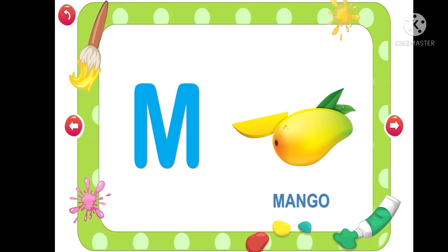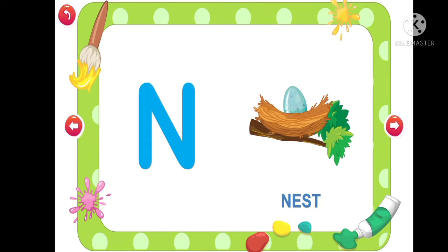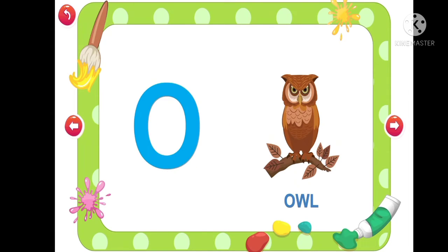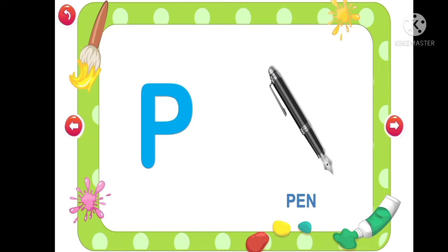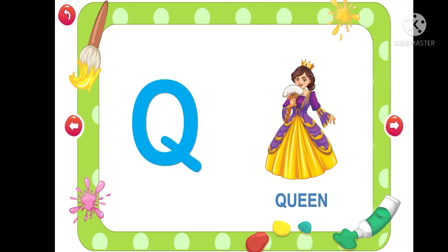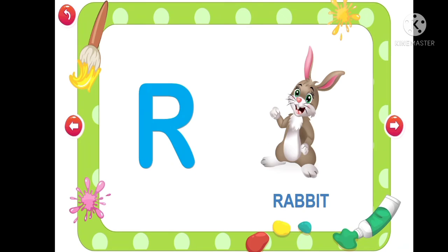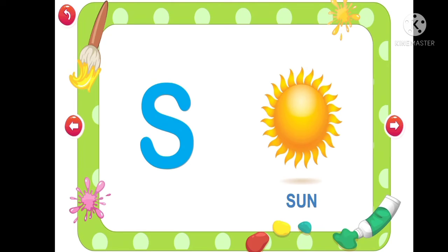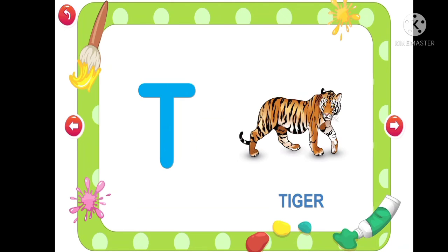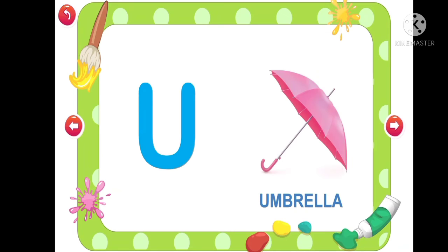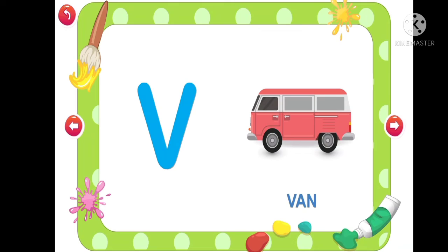N for Nest, O for Owl, P for Pen, Q for Queen, R for Rabbit, S for Sun, T for Tiger, U for Umbrella, V for Van.